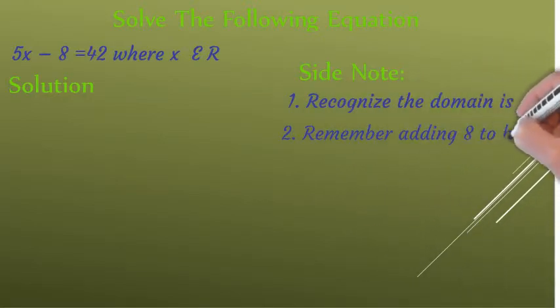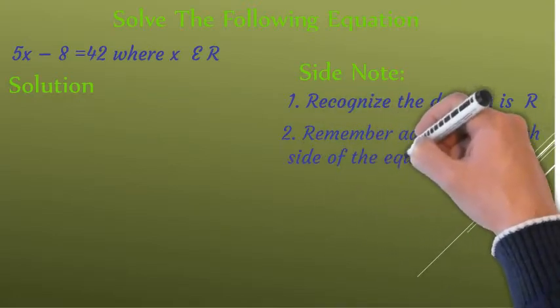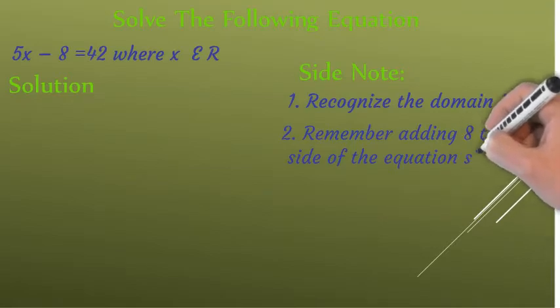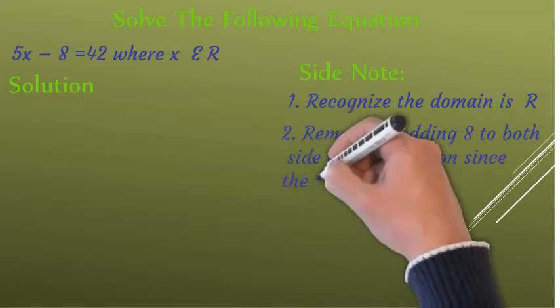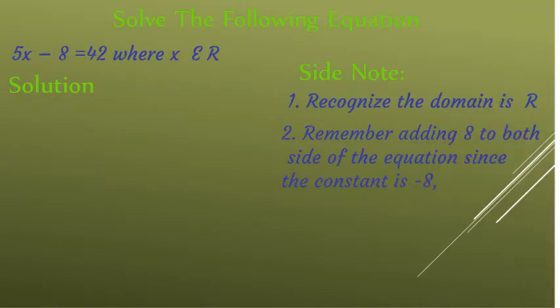Number two: the second thing you should recognize is that the constant is minus eight. So to solve the equation, we have to add eight to both sides of the equation. This allows us to move minus eight to the other side of the equal sign and gather the numbers together, keeping the variable with its coefficient by itself.